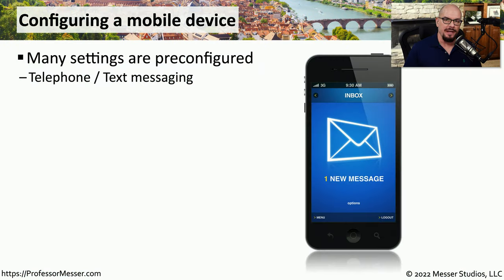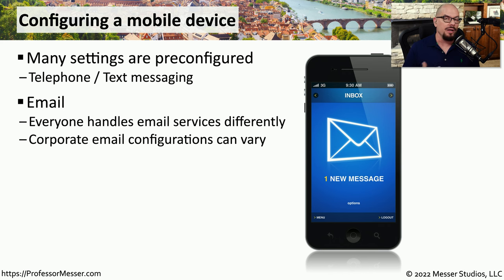When you turn on a mobile device for the first time, there are a number of settings that are already configured. For example, your phone number should be working and text messaging should be working. But there are other configuration settings that may need to be manually set on your phone.